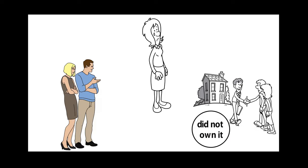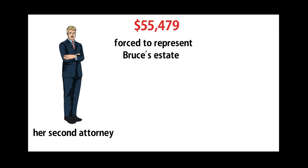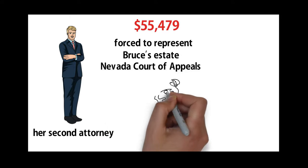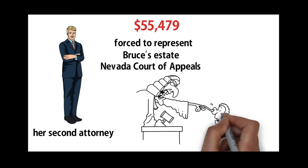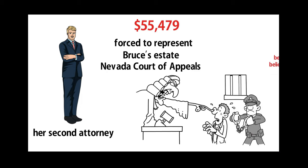Nona's crime is asking the court to make Brian and Deborah Chessie give Nona Bruce's house back because they bought it from a guy who did not own it. Nona has already paid $55,479 to her attorney, her second attorney, not the one that's been forced to represent Bruce's estate before the Nevada Court of Appeals because Judge Kirchner refused to let him withdraw after Nona was forced to file a complaint in Judge Johnson's court after she was kicked out of Judge Kirchner's court before the trial because Judge Kirchner believed Joseph Hong's lies.